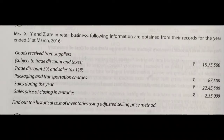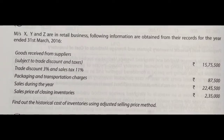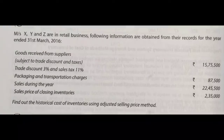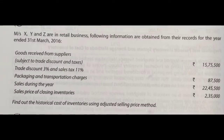Now we shall solve Illustration 5. Messrs X, Y and R are in retail business. The following information is obtained from the records for the year ended 31st March 2016. Goods received from suppliers are subject to trade discount and taxes — specifically 3% trade discount and sales tax of 11%. The value is Rs. 15,75,000.